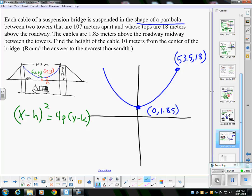Now I'm going to put numbers in here. I know that my h part is 0, and I know that my k part is 1.85, so I can shorten this to x² = 4p(y - 1.85).